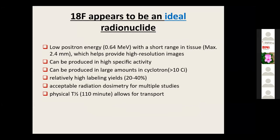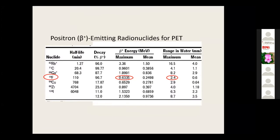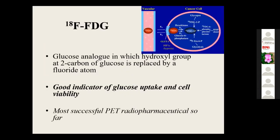Most radionuclides are generated by generators and cyclotrons based on their properties. F18 is generated from the cyclotron by a proton-neutron reaction from O-18 in water. Gallium-68 is generated by a germanium-gallium generator — an in-house generator. Other methods of radionuclide production include the reactor, which is mostly used for producing radionuclides for therapeutic purposes.